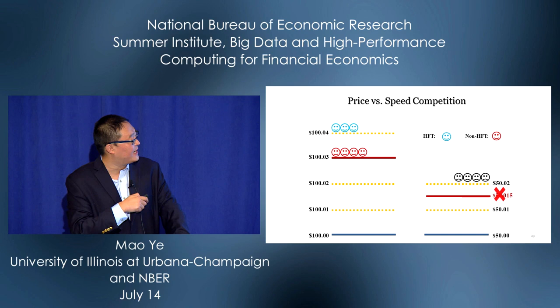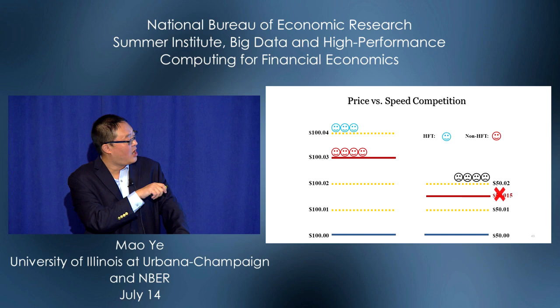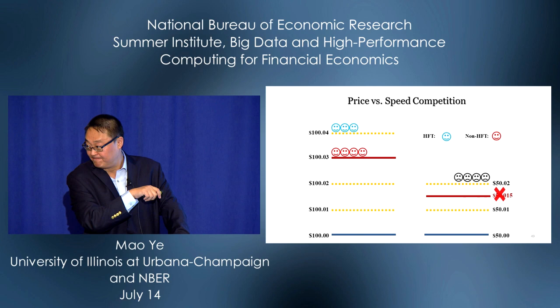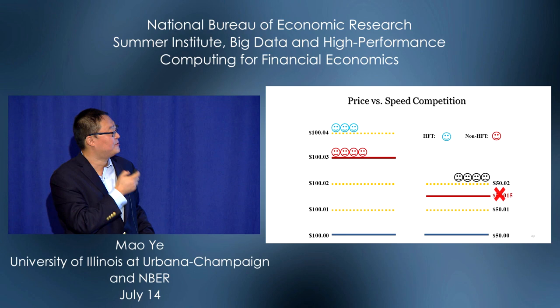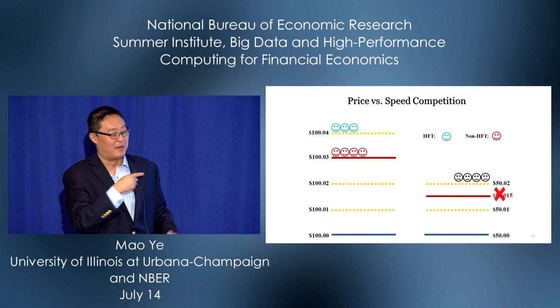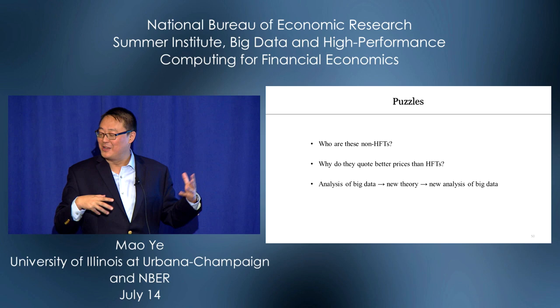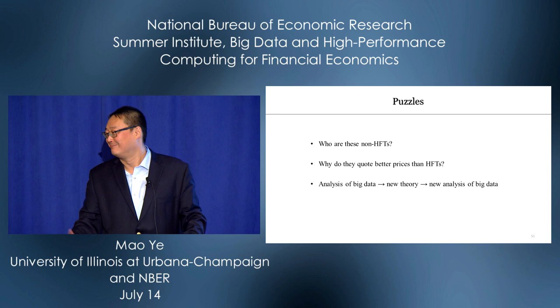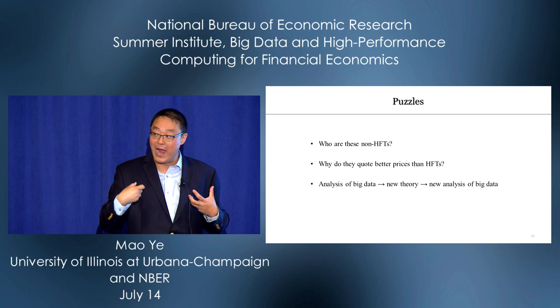What do we find? After a stock split reducing the price by half, non-HFTs move to a better price (e.g., $50 and 1.5 cents), while HFTs move elsewhere. But tick size kicks in, forcing non-HFTs to quote the same price as HFTs, and then they lose time priority. That's one of the origins of high-frequency trading. But this raises puzzles: who are these non-HFTs? Are they humans? Probably not. And why do they quote better prices than HFTs?